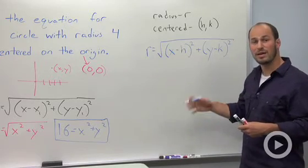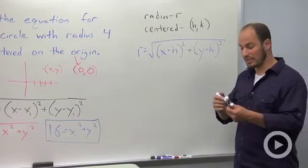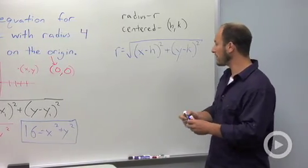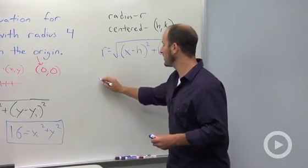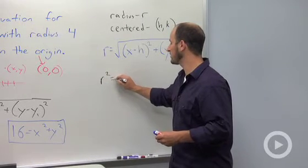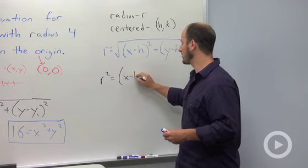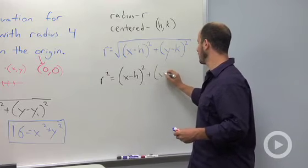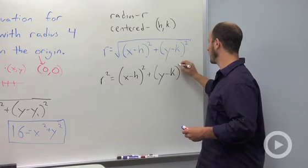Just like we did before, we square both sides to get rid of the square root. What we end up with is r² equals (x - h)² plus (y - k)².